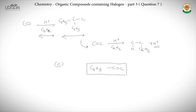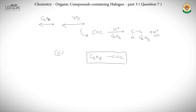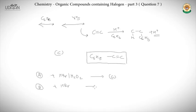Moving to the first line: debromination of A and B yields the same alkene C. And alkene C regenerates A and B by addition of HBr in presence and absence of peroxide respectively. This means when A reacts with HBr and peroxide it gives alkene C, and when B reacts with only HBr it gives C. So one gives anti-Markovnikov addition and the other gives Markovnikov addition.